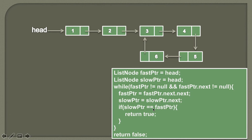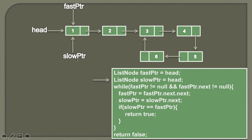Below is the algorithm to detect whether a linked list contains a loop or not. In the first step, we create a reference called fast pointer pointing to head. We also create a slow pointer which will refer to head. The basic idea is we will move slow pointer one step and fast pointer two steps at a time.